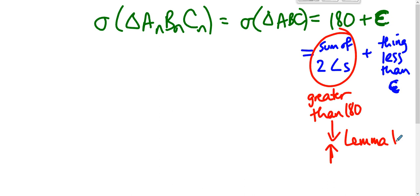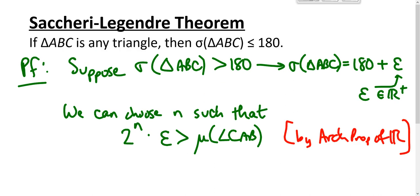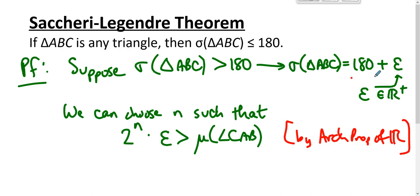Where did we go wrong? We went wrong when we assumed that the sum of the measures of the angles was 180 plus epsilon. Therefore, the angle sum cannot exceed 180, and the theorem is established.